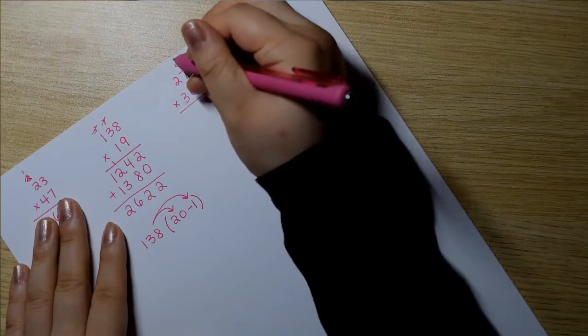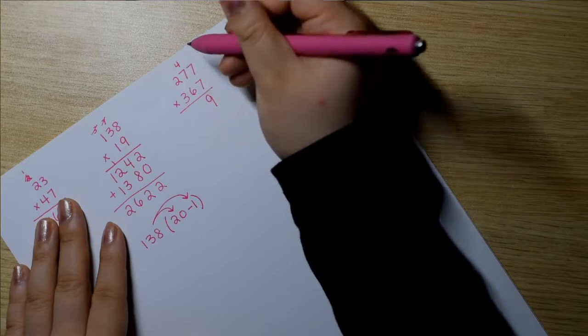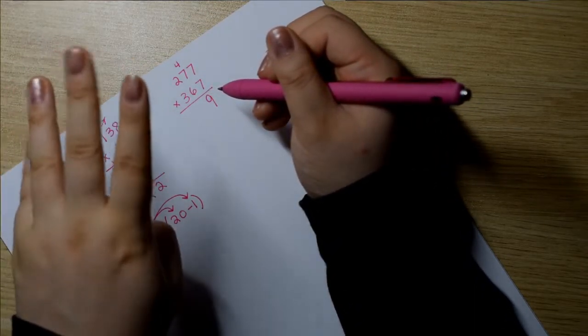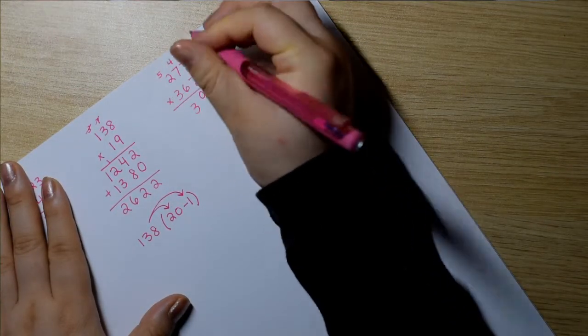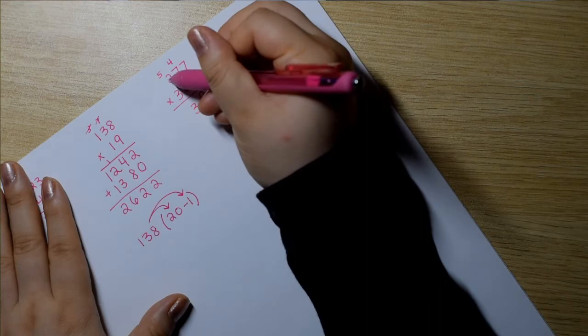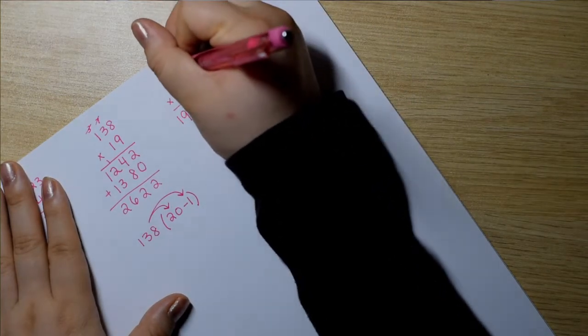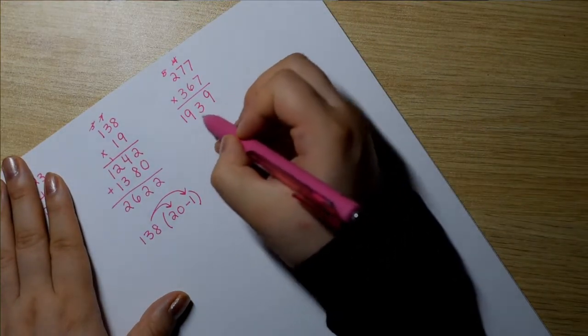7 times 7 is 49. 7 times 7 again is 49, plus another 4. 50, 51, 52, 53. Nice. Lay that down. 7 times 2 is 14, plus 5 is 19. Awesome. So let me just cross those out. We're done with those. So we have our first layer.